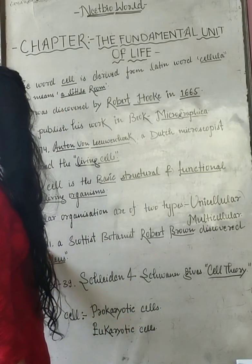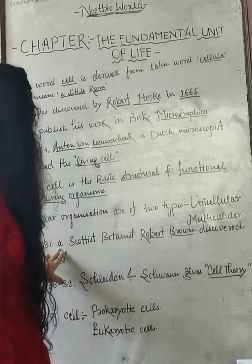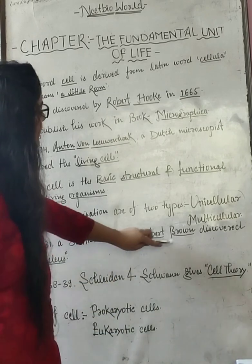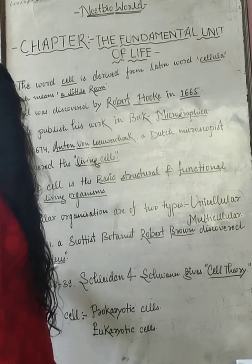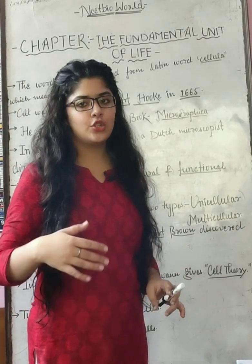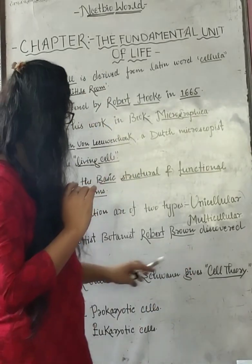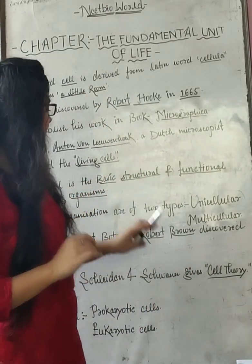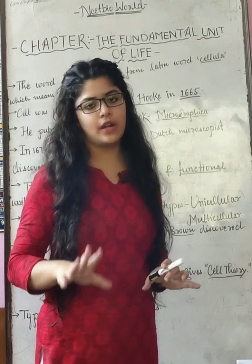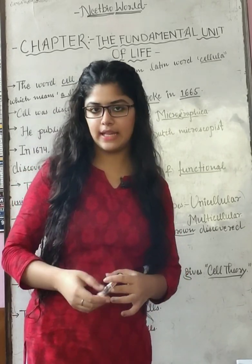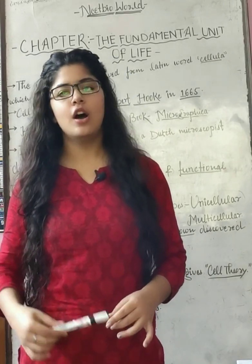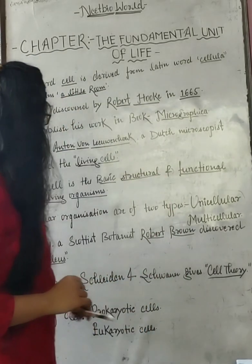In 1831, a Scottish botanist Robert Brown discovered the nucleus. Robert Brown discovered the nucleus in the orchid plant.